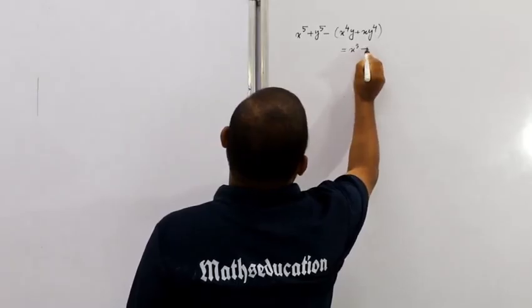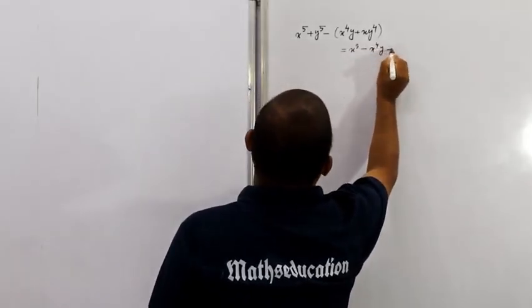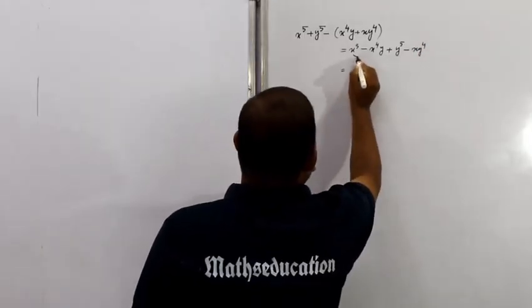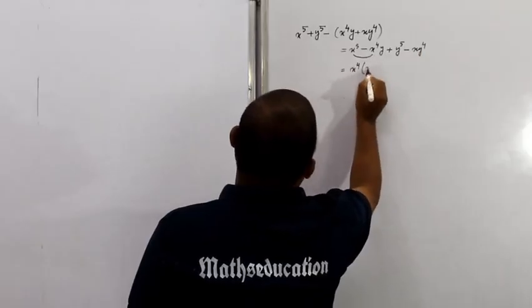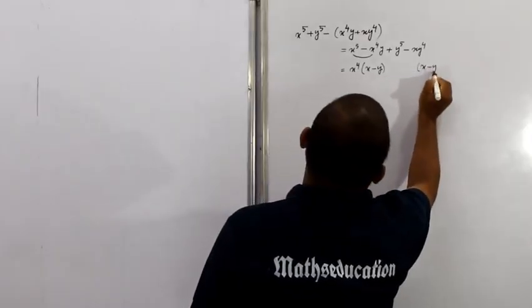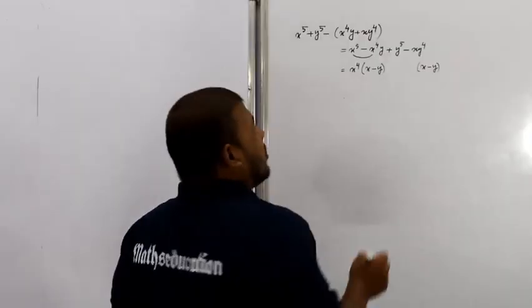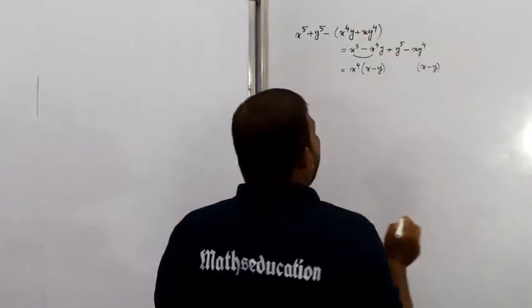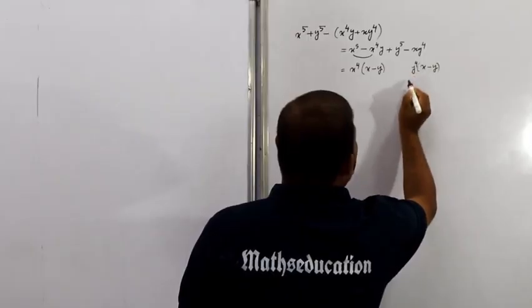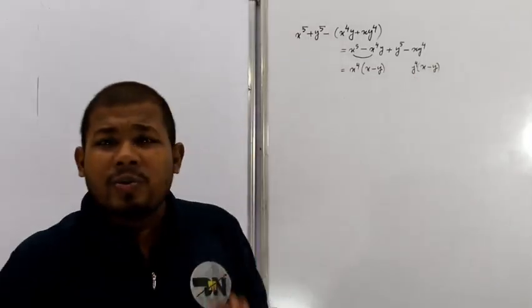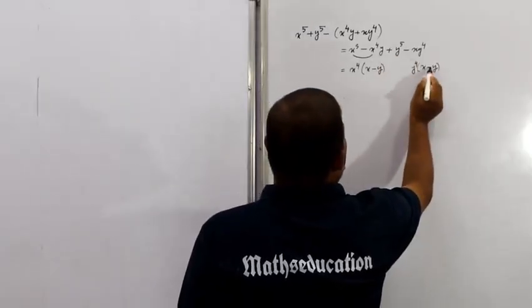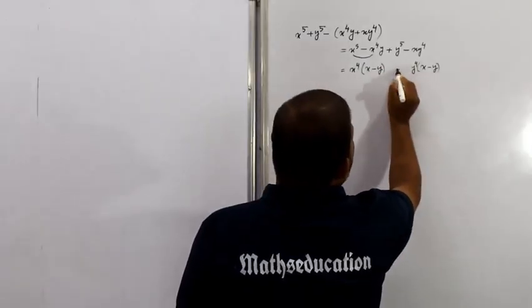We rearrange: x to the power 5 minus x to the power 4 into y, plus y to the power 5 minus x into y to the power 4. We observe that x to the power 4 is a common factor in the first pair.